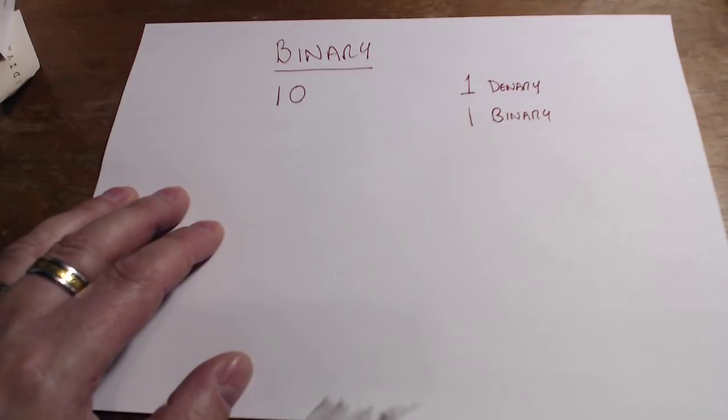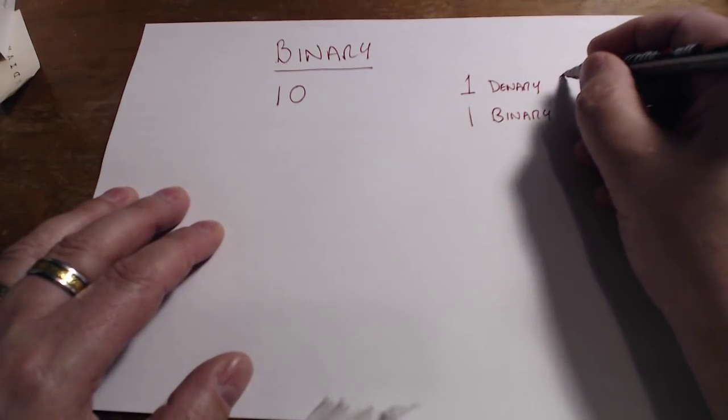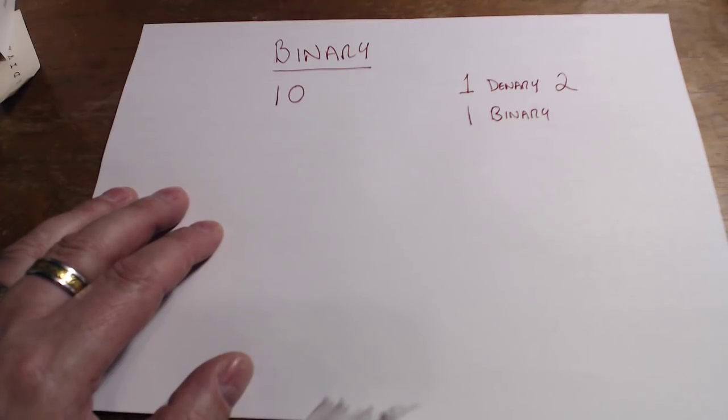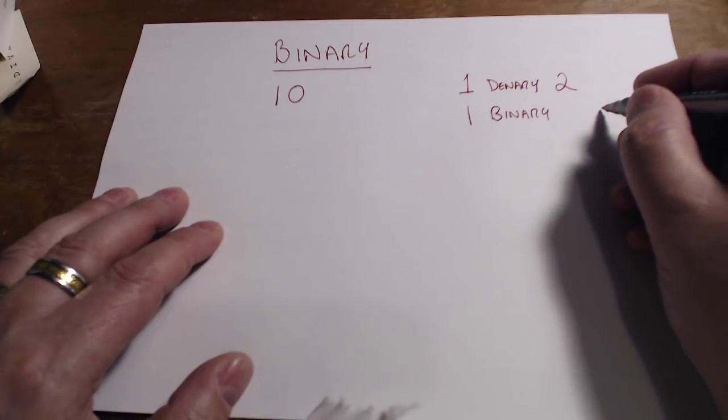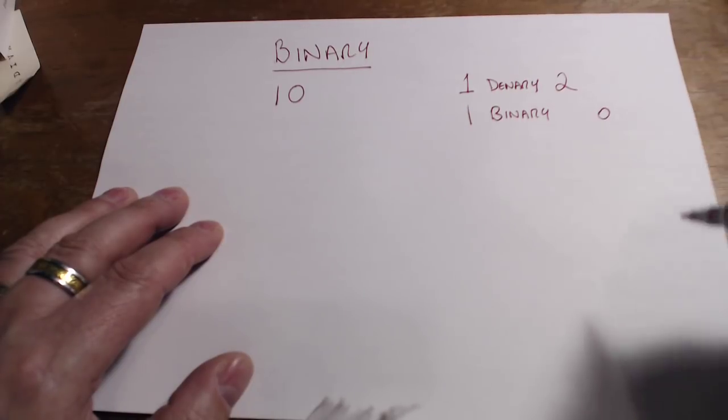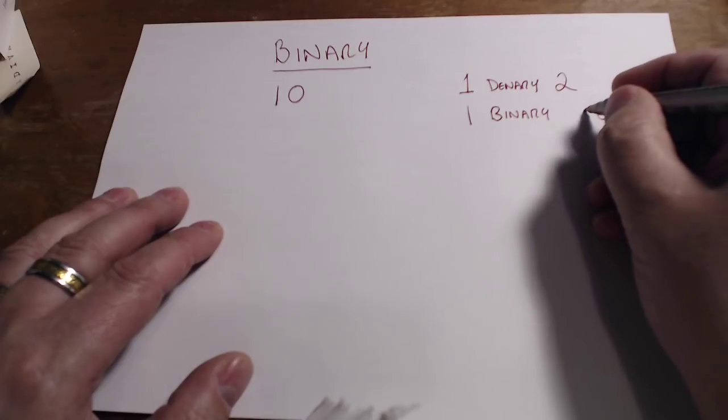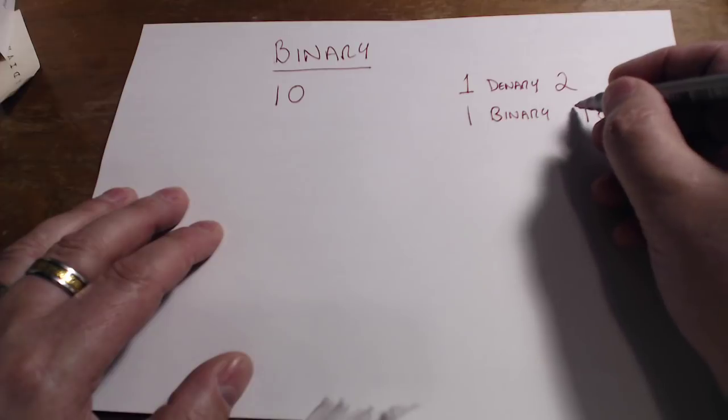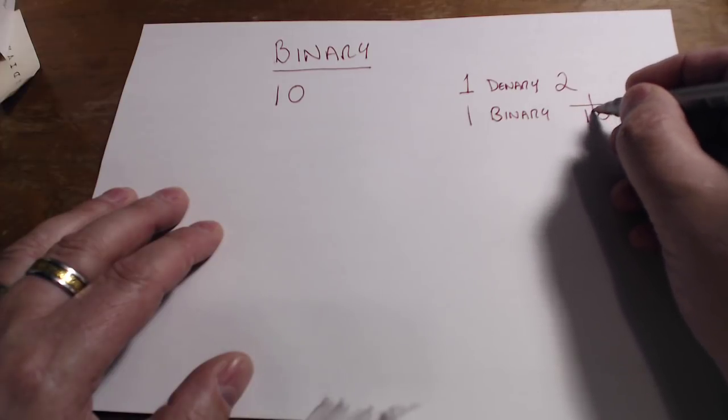Now if I wanted to write the value two in denary, I just write it as two, of course. But in binary I can't, because the highest value can only be one. So what I would write it as is zero—well, properly speaking, one zero. How does that work? Let's have a look, let's break this down.